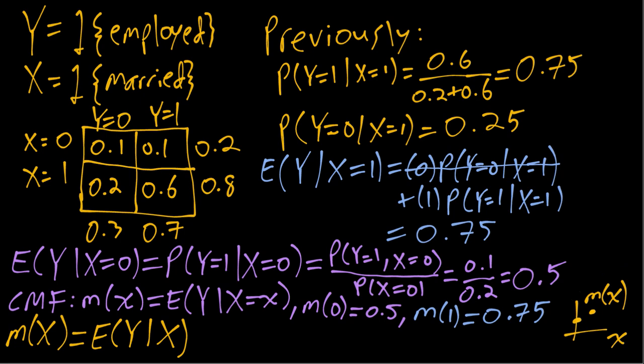In contrast, m of big X, or expectation of Y given big X, is a random variable. We can see that because big X, capital X, takes on two possible values, each with some probability. Then m of capital X also takes on two values with some probability.